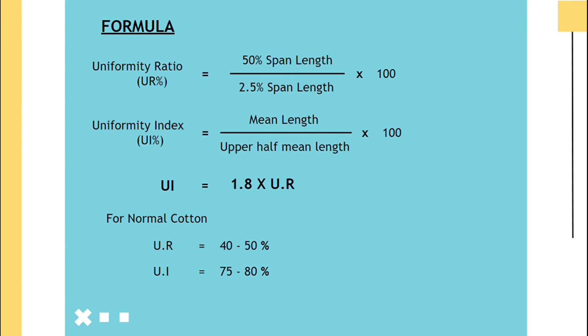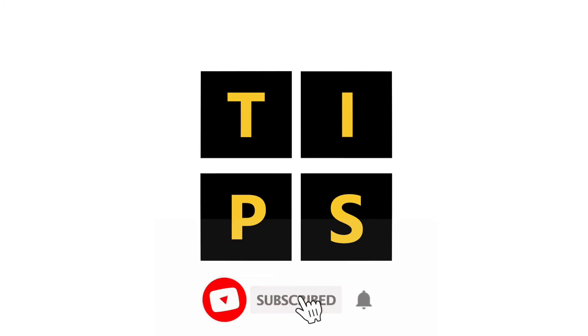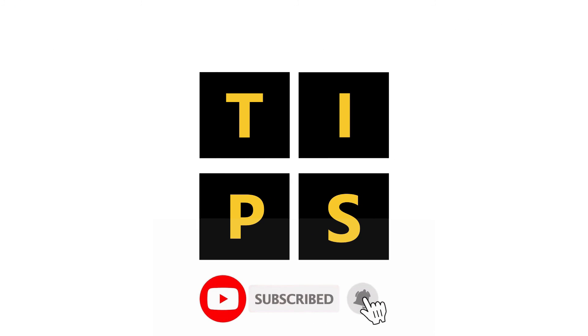For normal cotton, uniformity ratio will be in the range of 40 to 50% and index will be in the range of 75 to 80%. For polyester having the same length, uniformity ratio will be 51% and index will be 100%. For any queries, contact us with the link given in the description box.